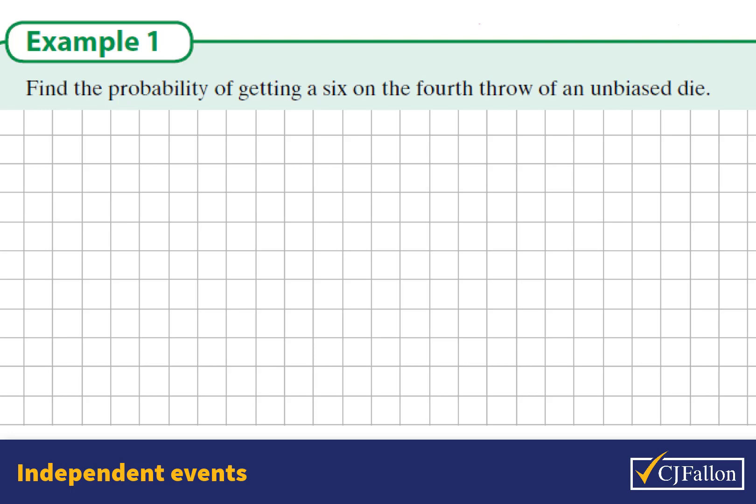Find the probability of getting a 6 on the 4th throw of an unbiased die. What we know about dice is that they are cubes with 6 sides, and the number 6 is just one of the 6 options.